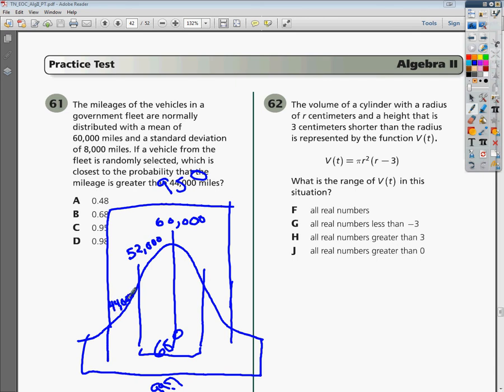The question asks which is the closest to the probability that the mileage is greater than 44,000 miles. So what I'm looking for is anything greater than that amount.